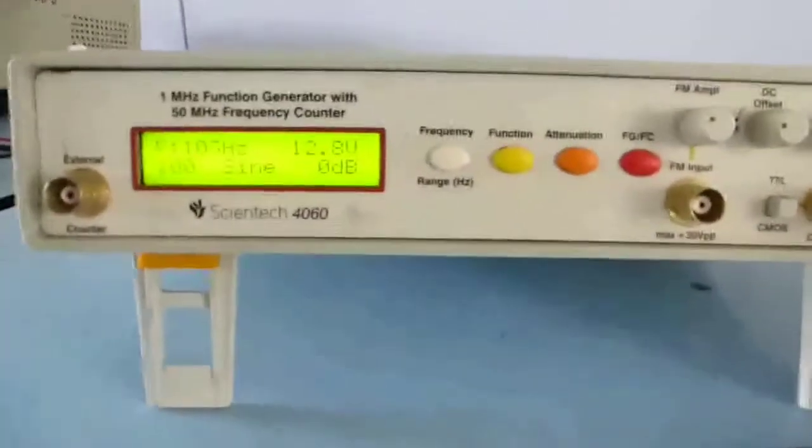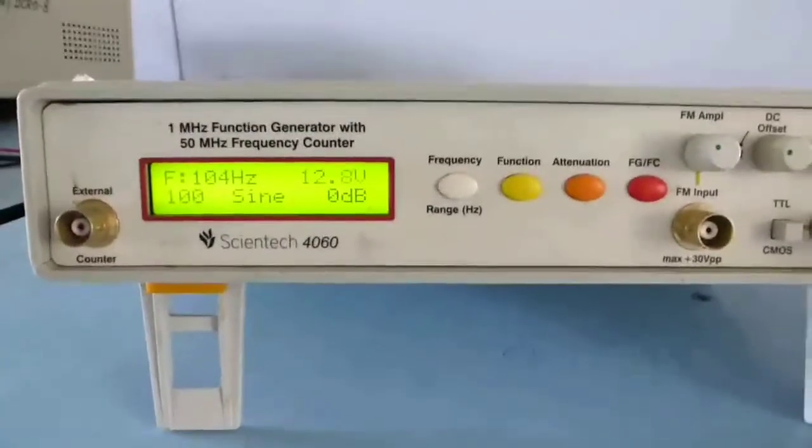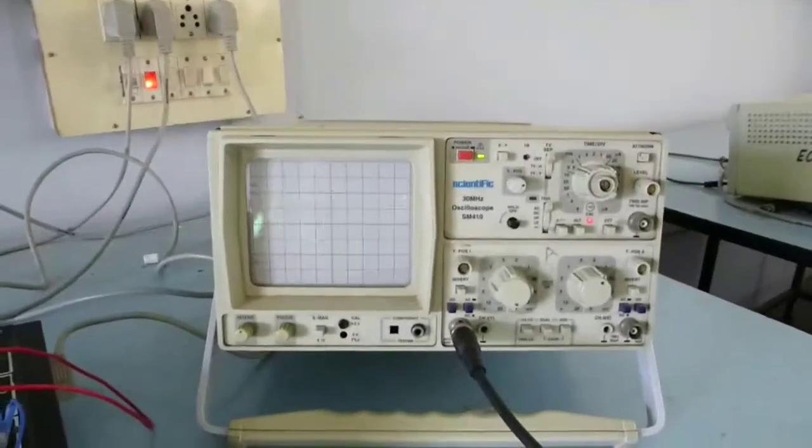In the function generator, we have to give the sine waveform instead of the square waveform, and we are going to see the output in the CRO.